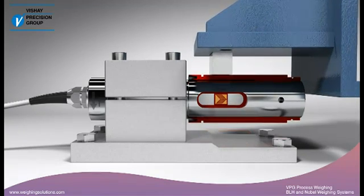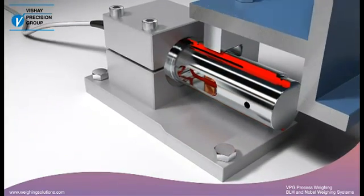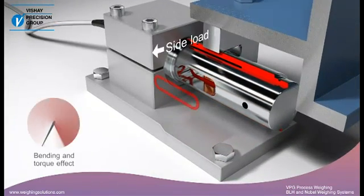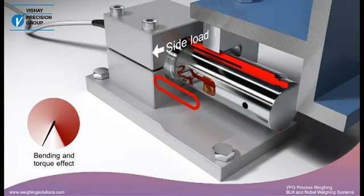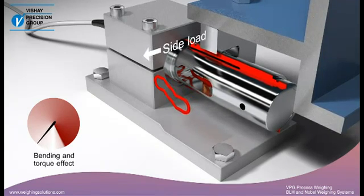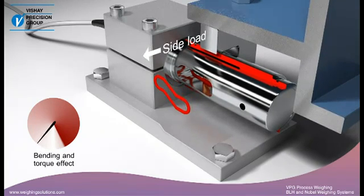The beam behaves in a similar way when subjected to side loads. This enables the transducer to reject errors caused by thermal or structural movement. Side loads that arise in the transverse direction due to agitation, wind, or structural deflections are similarly rejected.